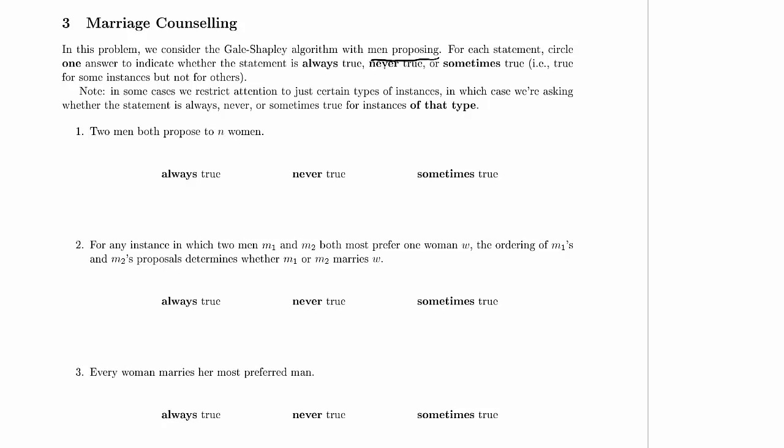Can it be the case that two men both propose to n women? Is that always, never, or sometimes true? For two men to both propose to n women, one of them has to be the first. That person proposes to their nth woman, meaning they were rejected or evicted by n-1 women — every single one of the women above that last person on their list.